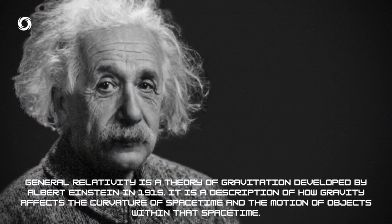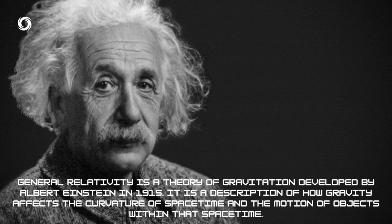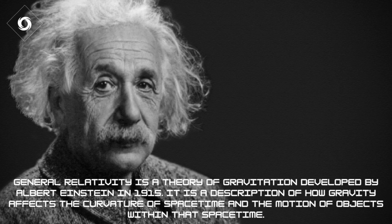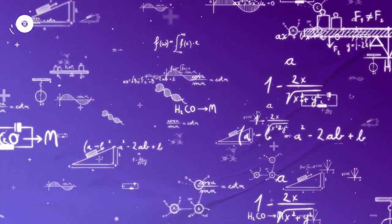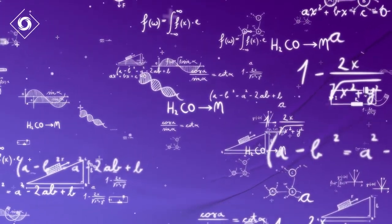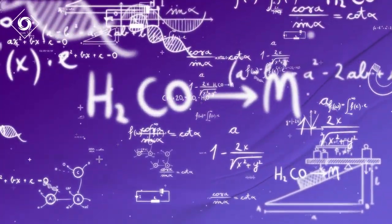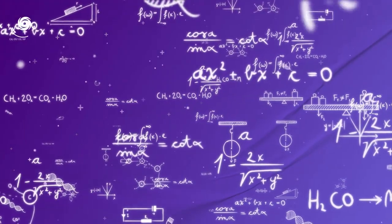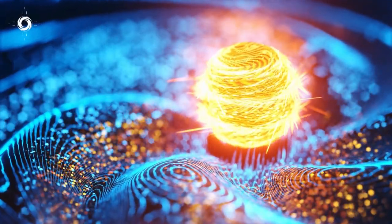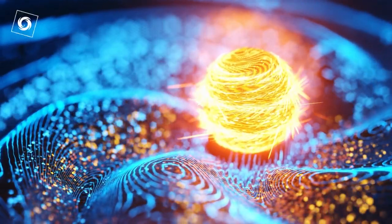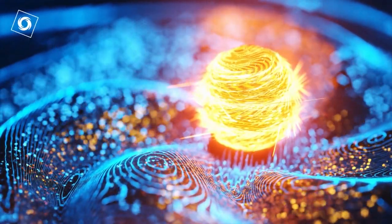The Theory of General Relativity. The first segment of this episode explores the theory of general relativity, developed by Albert Einstein in 1915. This theory explains how gravity warps the fabric of space-time, causing time to move slower in areas of higher gravity.